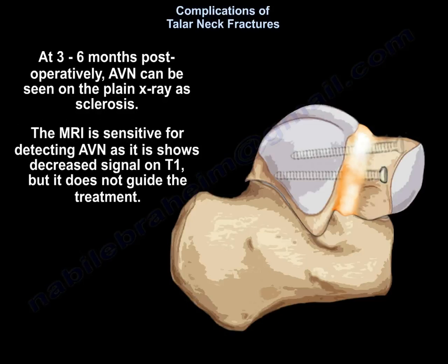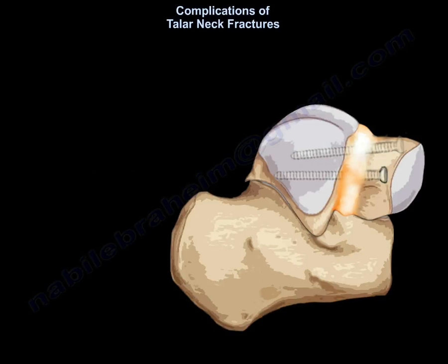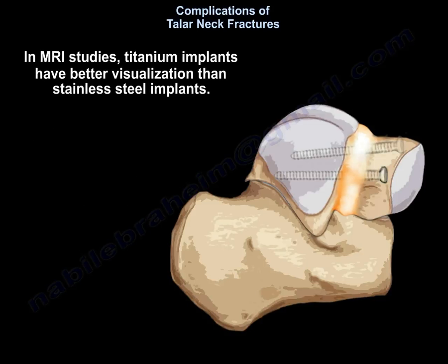At 3 to 6 months postoperatively, AVN can be seen on plain x-ray as sclerosis. MRI is sensitive for detecting AVN as it shows decreased signal on T1, but it does not guide the treatment. In MRI studies, titanium implants have better visualization than stainless steel implants.